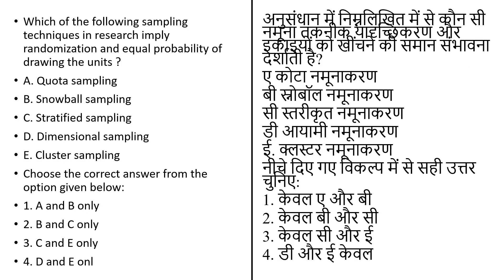Which of the following sampling techniques in research implies randomization and the equal probability of drawing the units? Probability sampling is defined as a sampling technique in which the researcher chooses a sample from a larger population using a method based on the theory of probability.